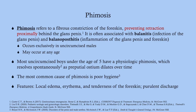Phimosis is a fibrous constriction of the foreskin. You are not going to see this in circumcised males — this is only seen in uncircumcised males. What happens is that the foreskin covers the glans of the penis and that foreskin cannot be retracted. Normally the foreskin will retract either if you manually retract it or if there is an erection.